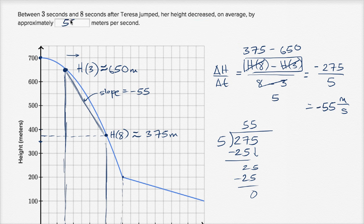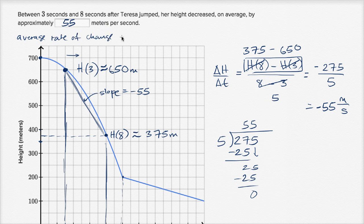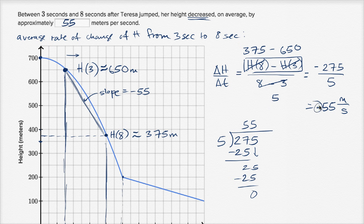So we write 55 meters per second. If they asked for the average rate of change of h from three seconds to eight seconds, that would be negative 55 meters per second. But when they say her height decreased, that's already taking the negative into account — it's definitely decreasing. The negative is already telling us that; it's decreasing by a rate of 55 meters per second.